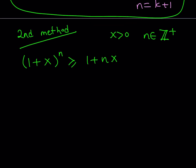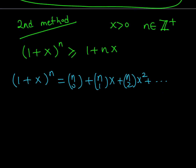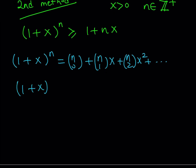We're going to be using the binomial theorem. If n is a positive integer and x is a positive real number, we can write the following. By the binomial theorem, this expression can be written as n choose 0 times 1, which is 1, plus n choose 1 times x, plus n choose 2 times x squared, and so on. Simplifying: n choose 0 is 1, n choose 1 is n, so we can write it as nx. And n choose 2 can be written as n times n minus 1 divided by 2 times x squared, and so on.